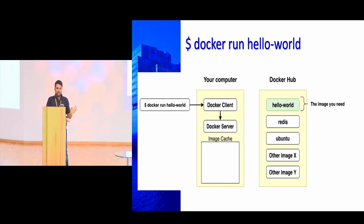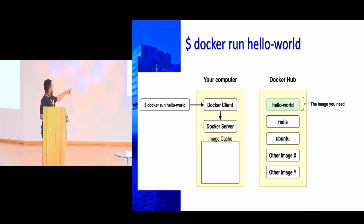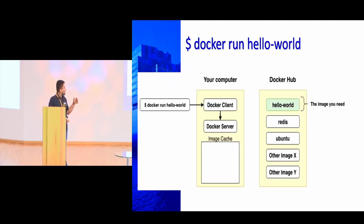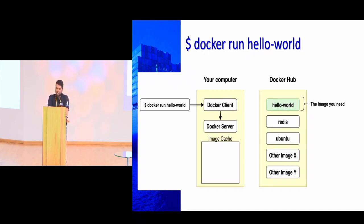When we start a container, we use the command 'docker run' and give an image name. The Docker client passes the command to the Docker server, which checks its image cache. If the image is available, it runs from there; if not, it pulls from the registry and starts a container. A running container is nothing but a running instance of an image. The Docker client doesn't actually do much — the main work is done by the Docker daemon, which is responsible for creating images, maintaining containers, uploading images, and everything else.